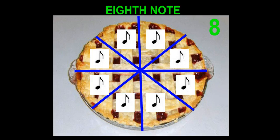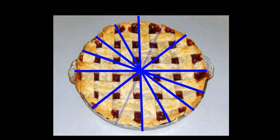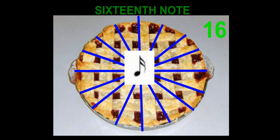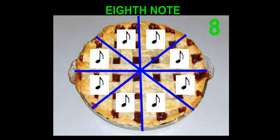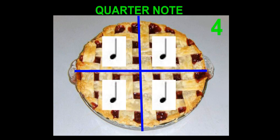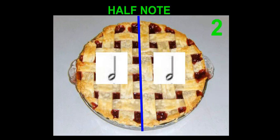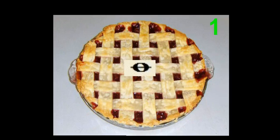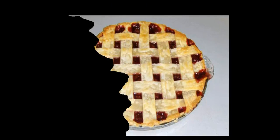We can slice this pie in half one more time to get a smaller note. When we do this, we get 16 slices of pie — and that's why we call this one a sixteenth note. Sixteen sixteenths equals eight eighths, which equal four quarter notes, which equal two half notes, which equal one whole note. That's a mouthful, but it all goes back to equivalent fractions.